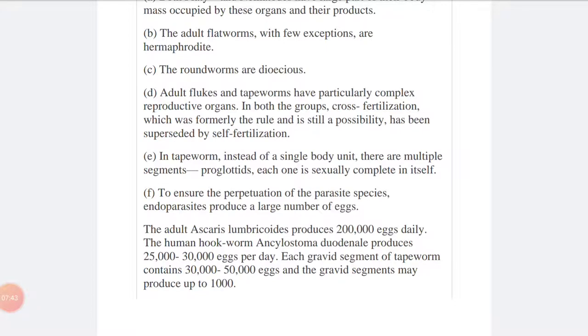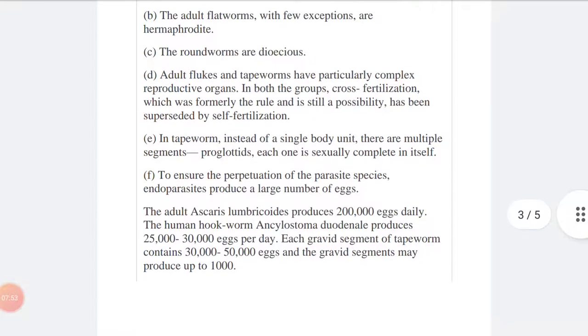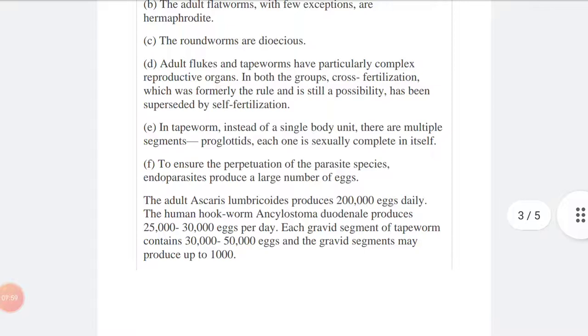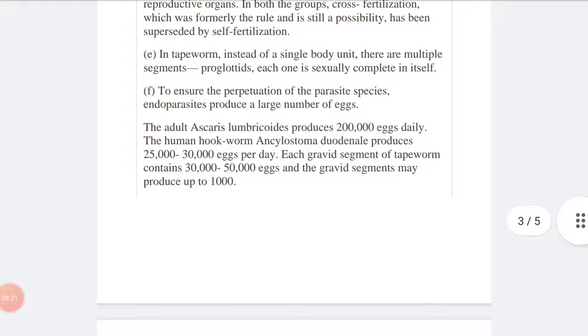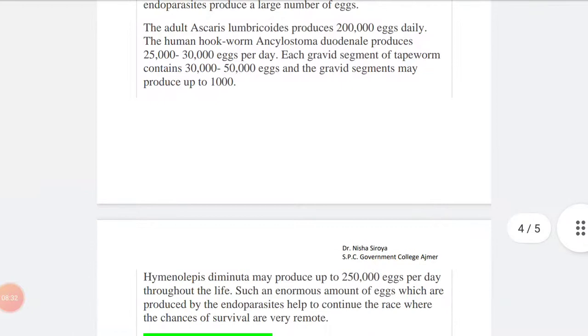Because they are hermaphrodite, only one animal produces the egg and sperm, and self-fertilization is possible. In tapeworms, instead of a single body unit, there are multiple segments or proglottids. Each one is sexually complete itself. Every segment, the proglottids, perform the reproduction. To ensure the perpetuation of the parasite species, endoparasites produce a large number of eggs. Because the possibility of high mortality is there, they have to produce large number of eggs.